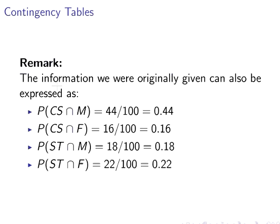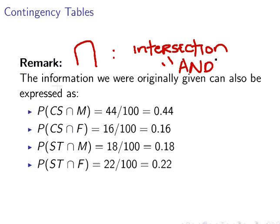Moving on, the information we were originally given can be expressed using intersection notation. The intersection symbol — verbalized as 'and' — gives us joint probabilities. For example, the probability of CS and M is 44 out of 100, CS and F is 16 out of 100, statistics and M is 18 out of 100, and statistics and F is 22 out of 100. These are called joint probabilities.